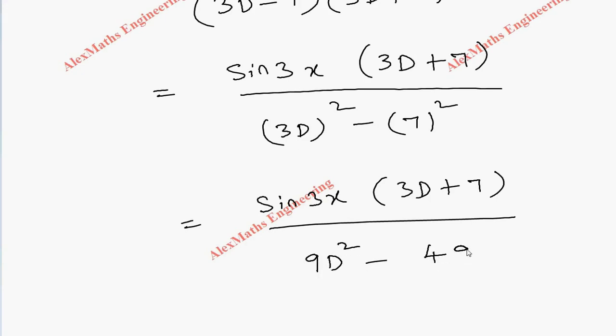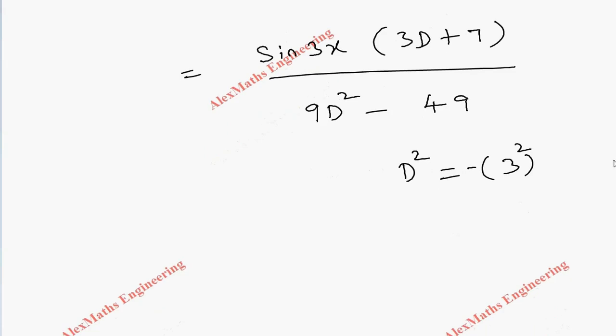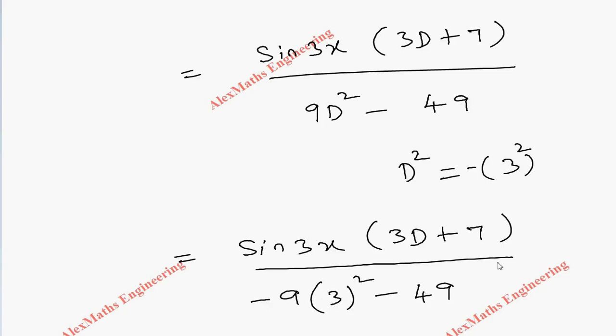As per the procedure, we have to replace D² as 3², that is D² as 3² with a minus sign outside. So sin(3x)(3D + 7) divided by 9 × 3² with a minus sign outside, and -49.